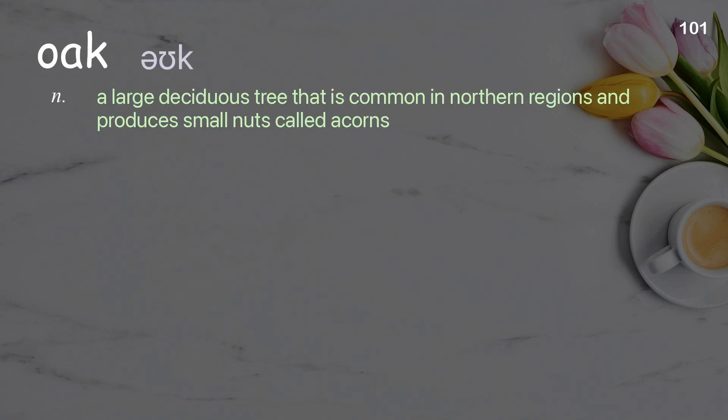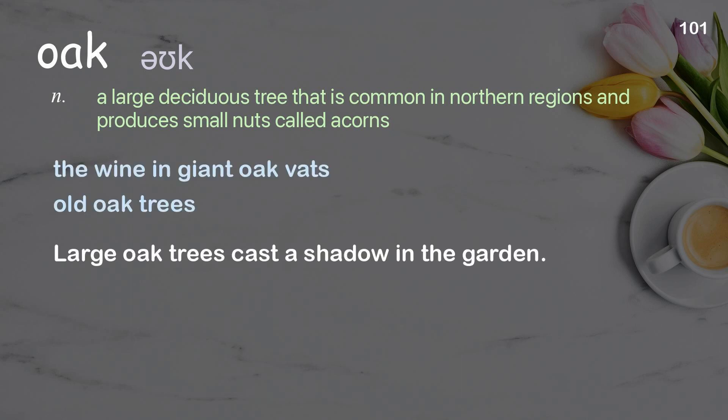Oak: A large deciduous tree that is common in northern regions and produces small nuts called acorns. Examples: The wine in giant oak vats, Old oak trees. Large oak trees cast a shadow in the garden.